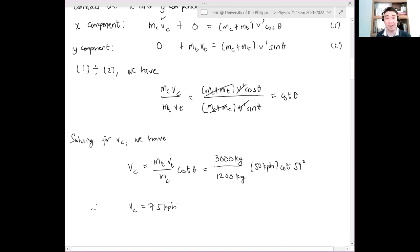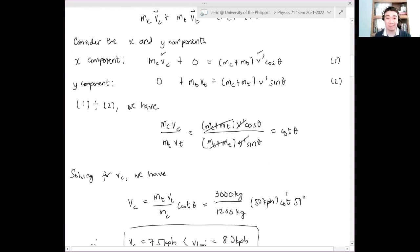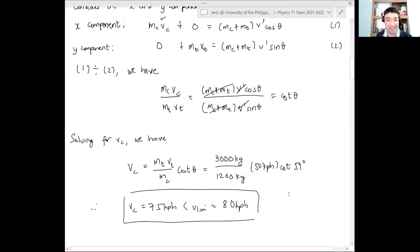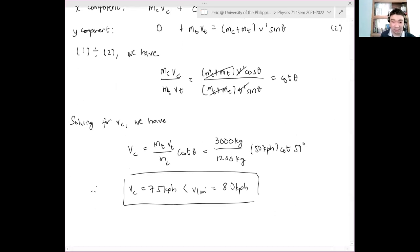But, based on the problem, what is the speed limit? 80 kph is the speed limit. This is still less than the speed limit. Let's say vlim, which is 80 kph. Good thing it didn't hit at a school zone. Hence, the evidence, the pieces of evidence that were presented undermine, therefore, it doesn't support, hence, the pieces of evidence undermine that you are over speeding.